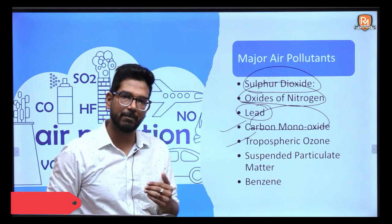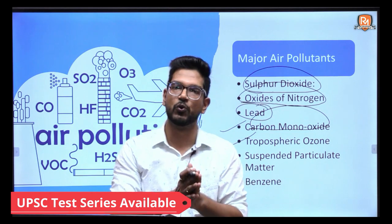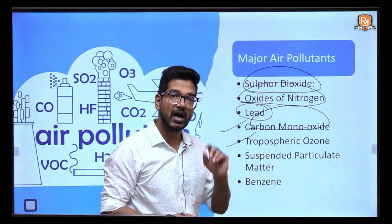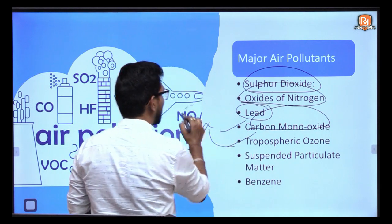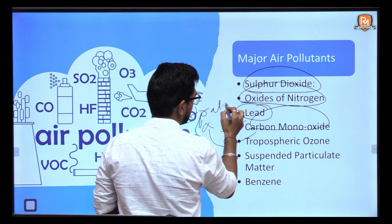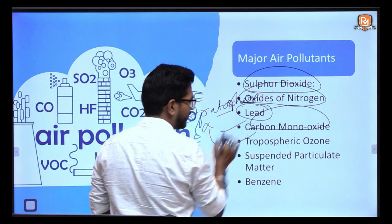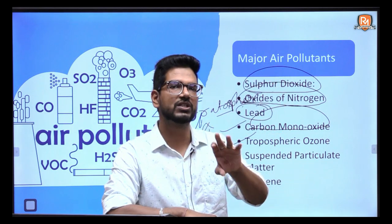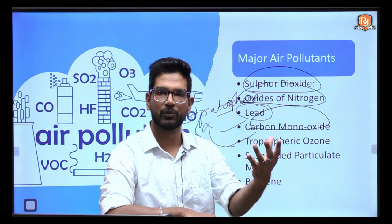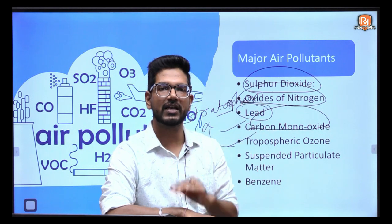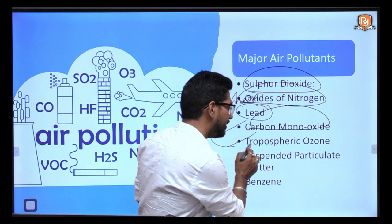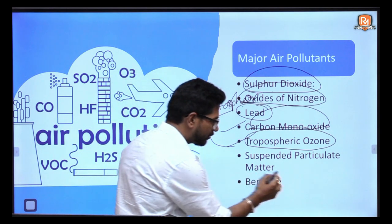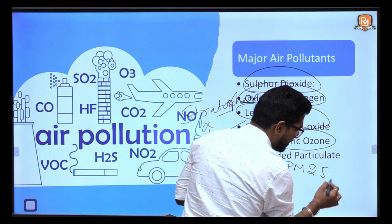Tropospheric ozone is also a major pollutant and is harmful for humans — this is the bad ozone, whereas good ozone exists in the stratosphere. Based on this, we can divide pollutants into primary and secondary types. There is also suspended particulate matter — PM 2.5 and PM 10 — which are injurious to your lungs.